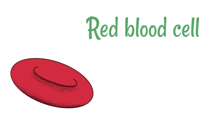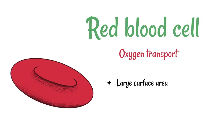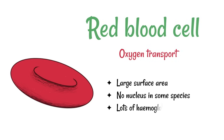Next up is the red blood cell. This one is responsible for oxygen transport. It's got a large surface area which is provided by that biconcave shape. It's got no nucleus — in humans, the red blood cells have got no nucleus, and that gives more room for hemoglobin, which is what's responsible for carrying oxygen.